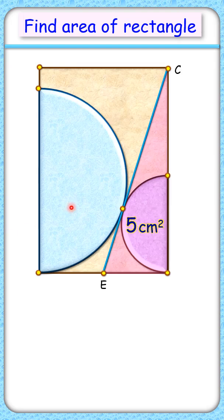This interesting question has two semicircles in a rectangle with CE as the common tangent and the area of this red triangle is 5 centimeter square. The exciting part is with this limited data we have to find the area of the full rectangle.